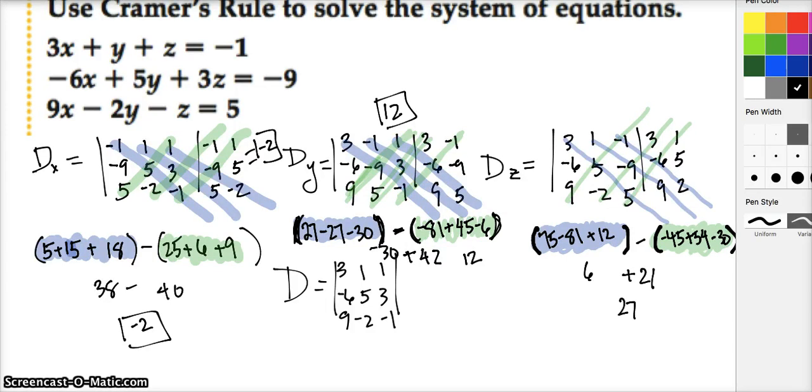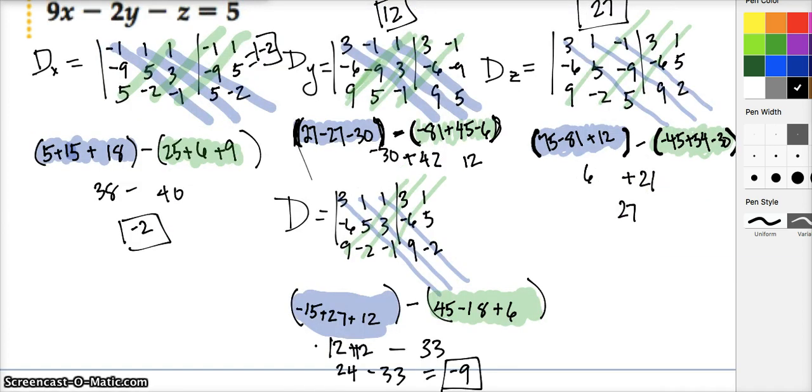75 minus 81 gives negative 6, negative 6 plus 12 gives positive 6 minus all of this stuff. Negative 45 plus 54 is positive 9.